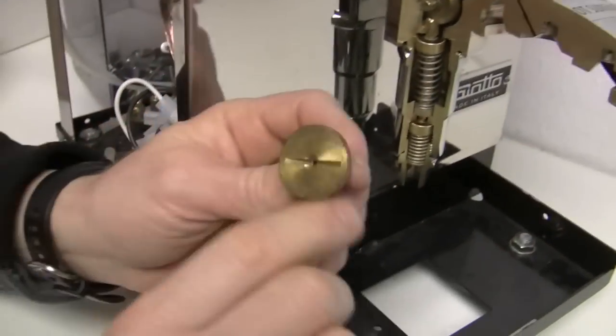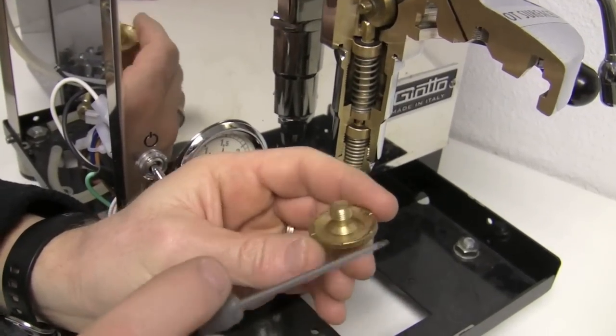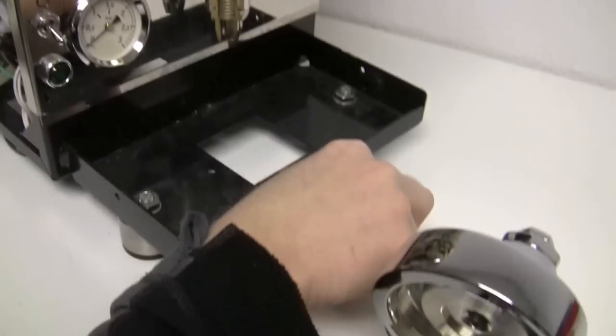And this is the little diffuser. The water would hit here and go out these little holes, which would spread it out a little bit before it hits the screen.